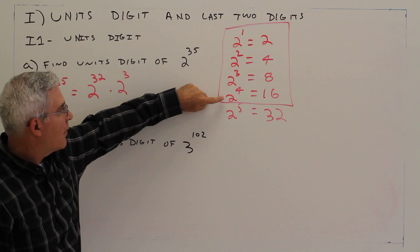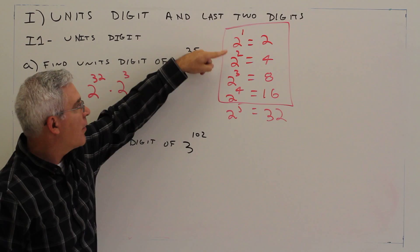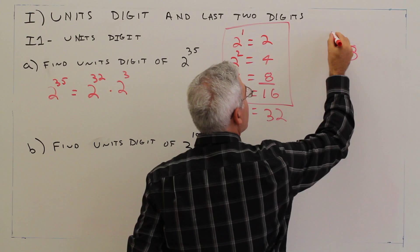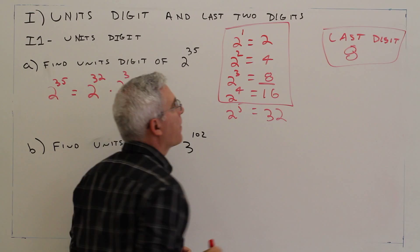And 2 to the 32nd is pretty much going to get you here. It's a multiple of 4. And then I've got to add 3, 1, 2, 3. So you'd get a last digit of 8.